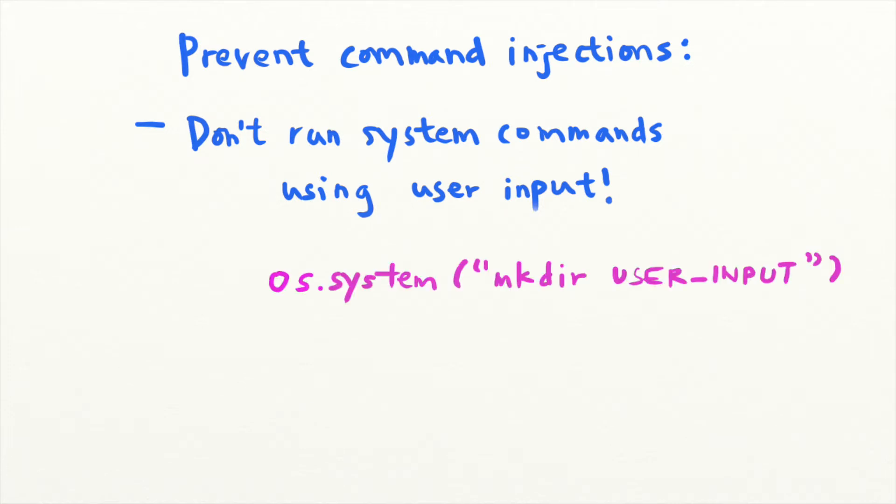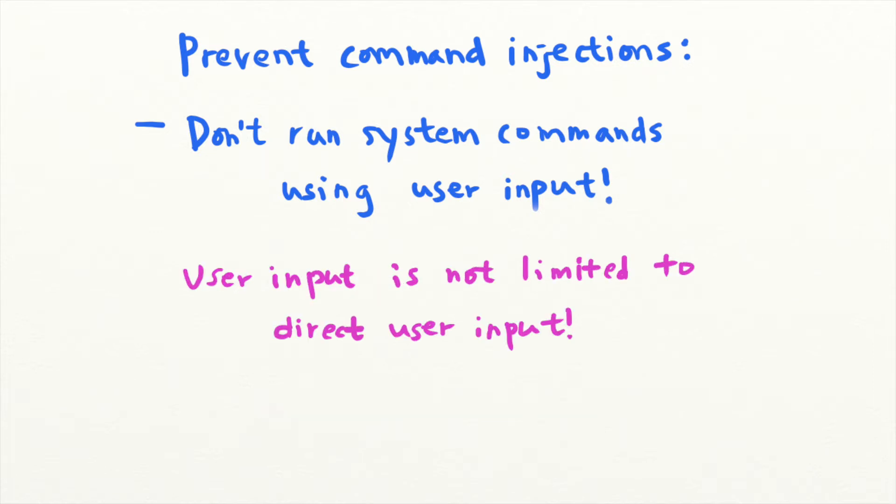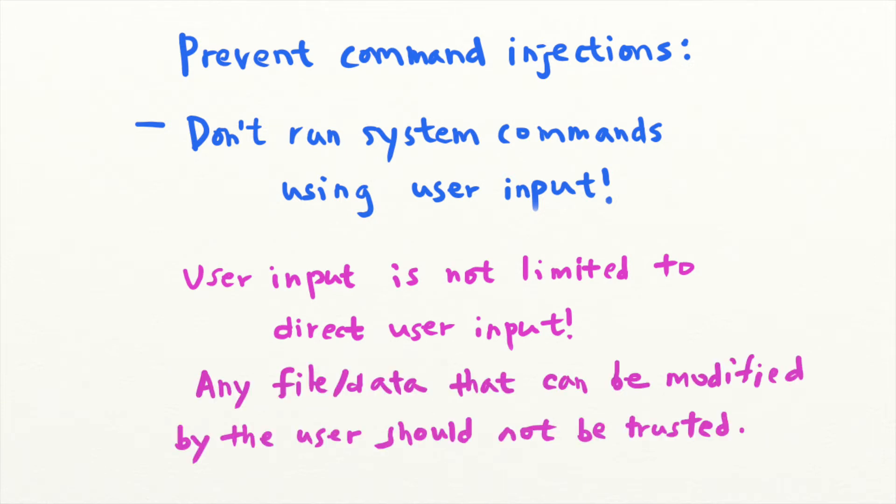For example, instead of using os.system makedir, you can use os.makedir in Python instead. And since user input can be passed into evaluated code through files that are parsed by the application, you should treat user-uploaded files as untrusted as well as protect the integrity of existing system files that are executed and included by programs.